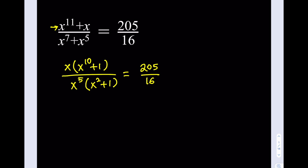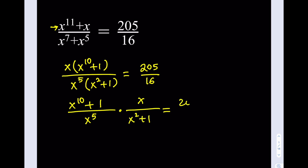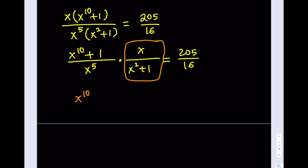At this point you may be tempted to cancel out the x's — and since x does not equal 0 we could do it — but it's not really going to help us a lot. So what I'm going to do is separate this into two expressions. When we have a division problem we normally flip and multiply, so I'm going to do the opposite here. I'm going to multiply both sides by the reciprocal of this expression, which is x squared plus 1 divided by x. That gives us x to the power of 10 plus 1 over x to the 5th, equal to 205 divided by 16 times x squared plus 1 over x.